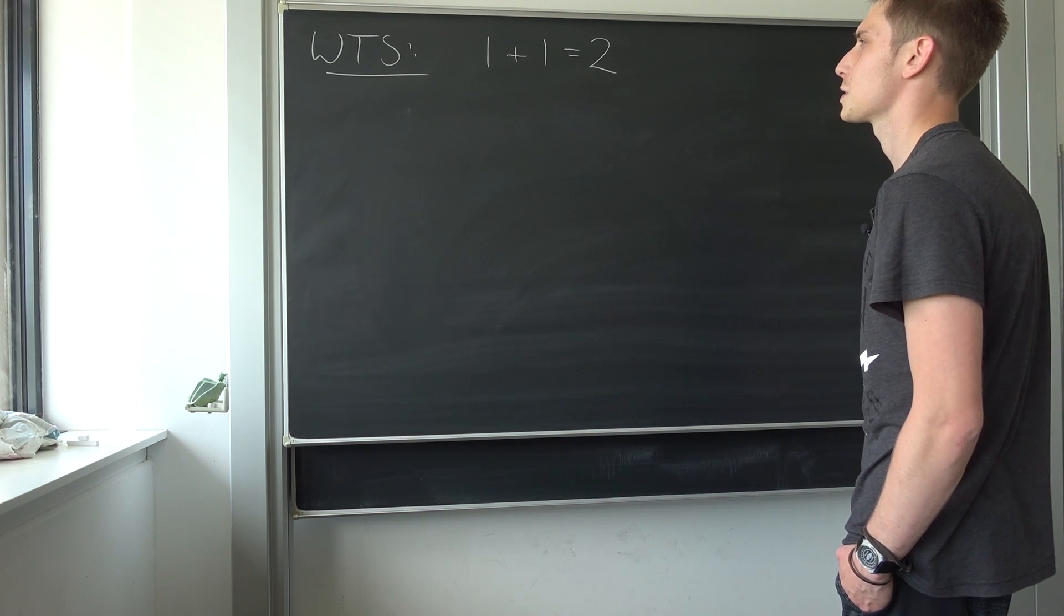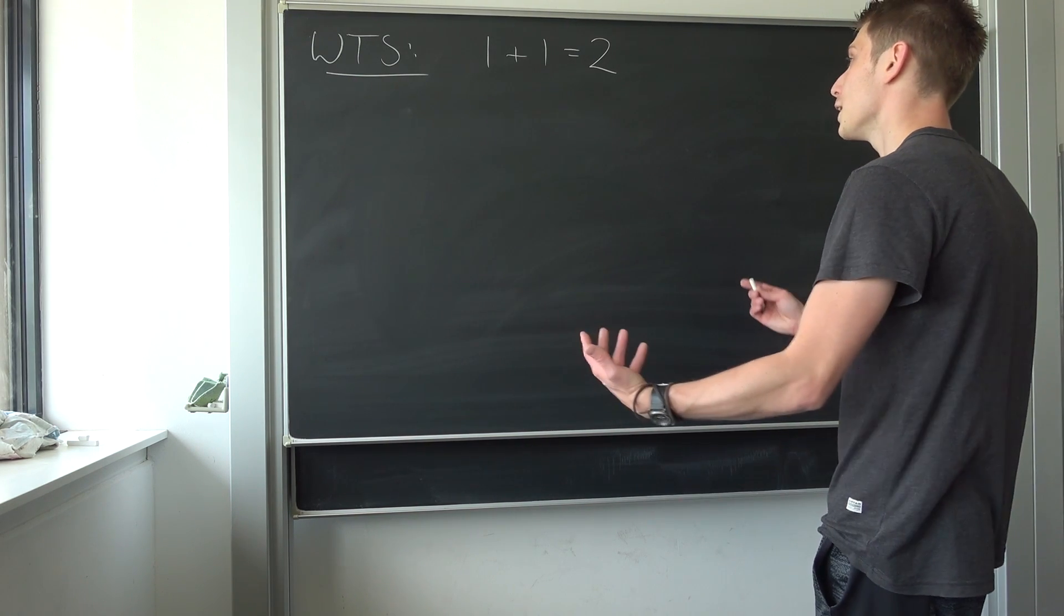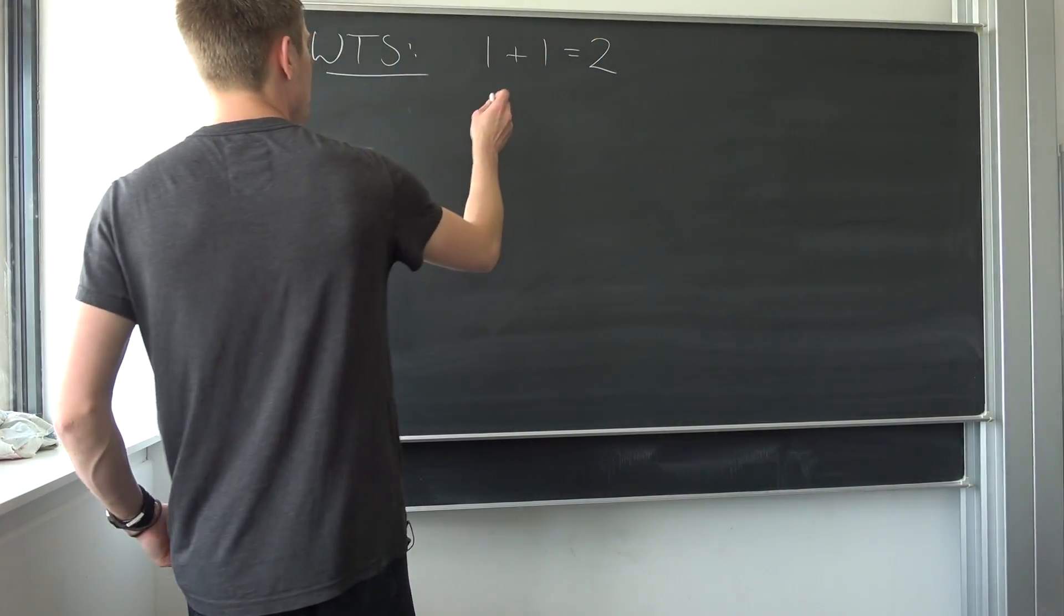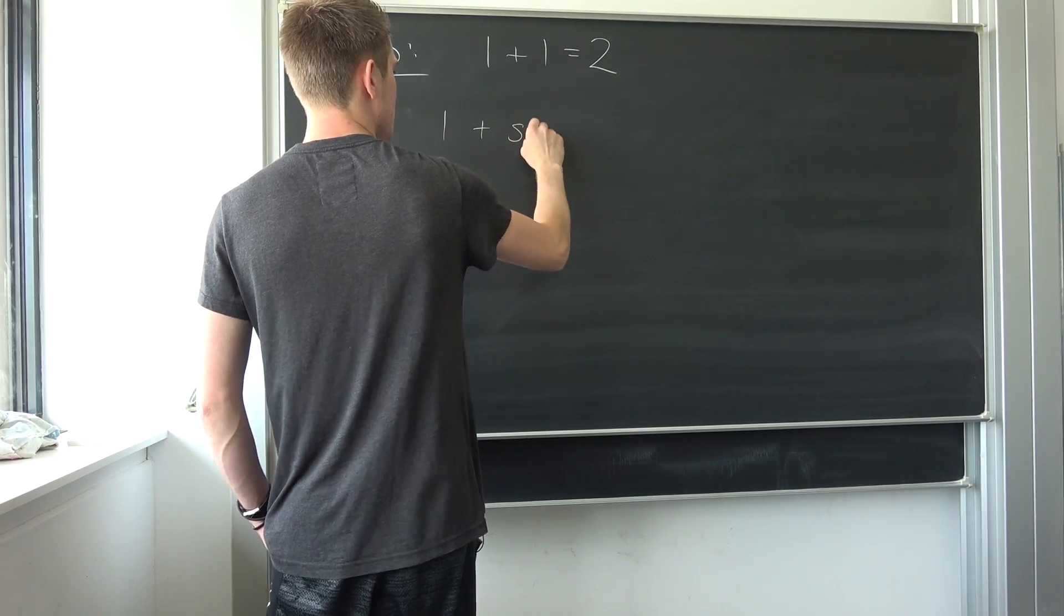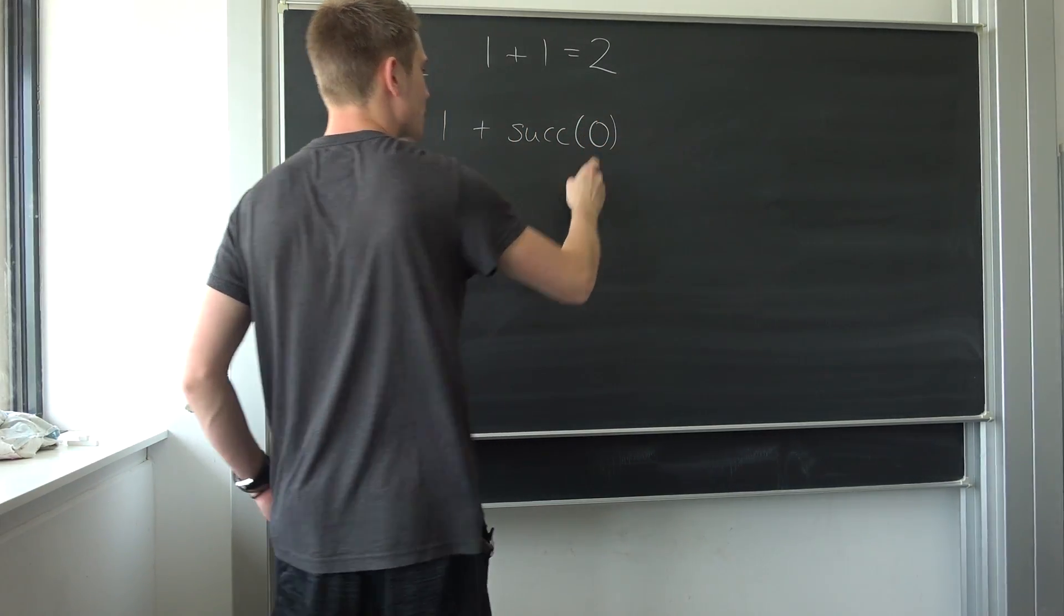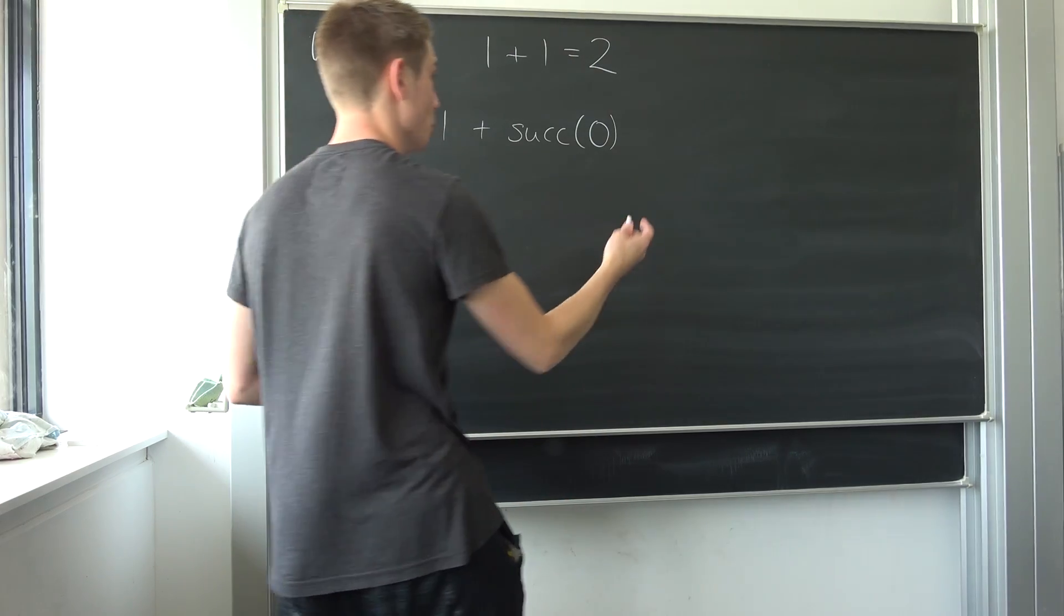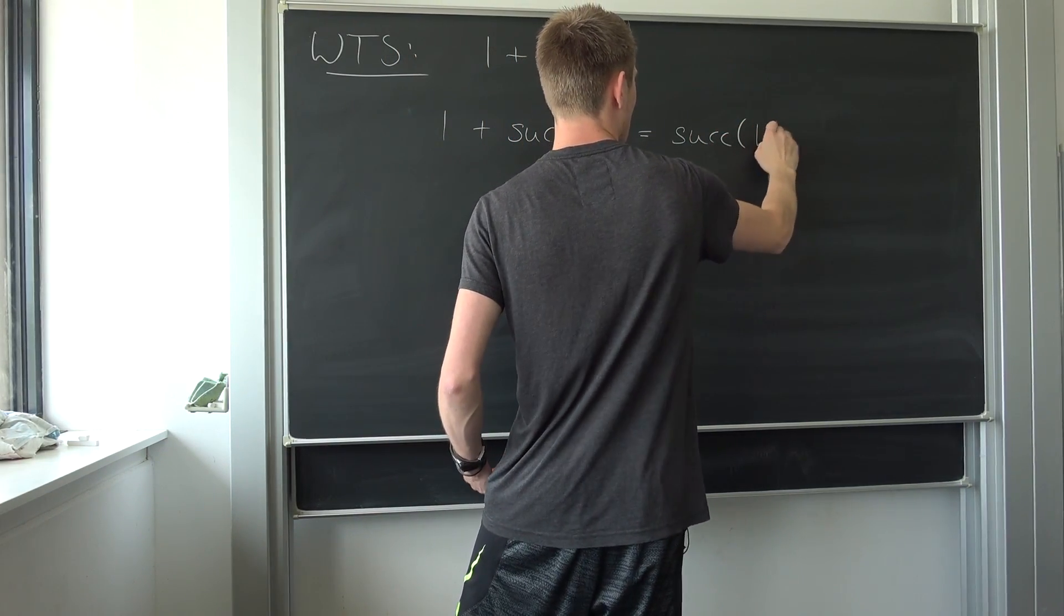All I really have to do is prove this simple statement. Can't I just do this directly? I mean equals two is an equivalence relation in the natural numbers. So by the Peano axioms, we have one plus one is nothing but one plus the successor of zero. And we can use the second rule of addition on this one, so that's nothing but the successor of one plus zero.